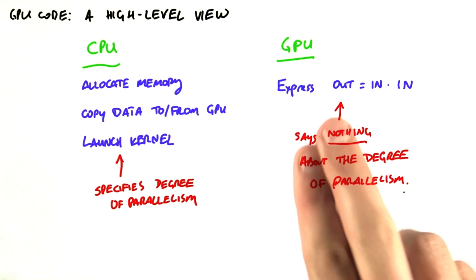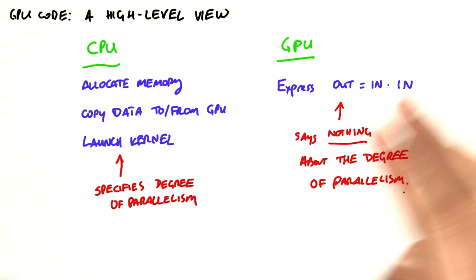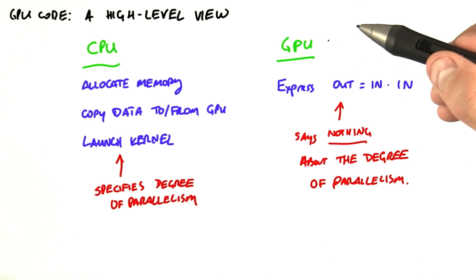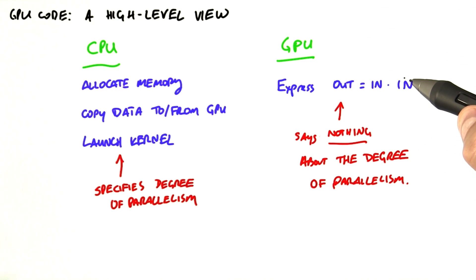So the GPU code will have two parts, one of which runs on the GPU, one of which runs on the CPU. So we're going to start by saying, what do we have to express in the GPU part of this program? And we only need to express something very simple, the idea that out equals n times n.